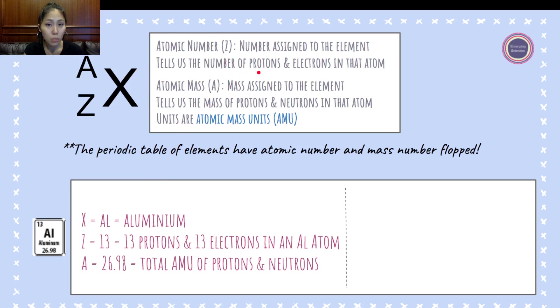Atomic number tells us the number of protons and electrons in that atom. So number of protons, it's 13. So there's 13 protons and there's 13 electrons in an aluminum atom. The atomic mass tells us the protons and neutrons in that atom, so it tells us the total.